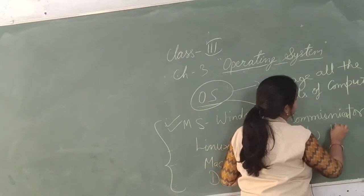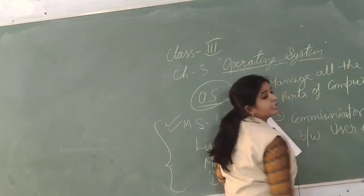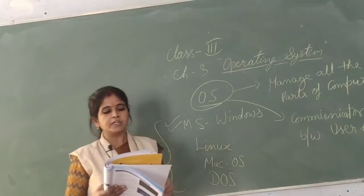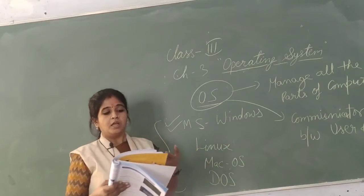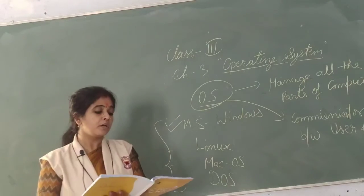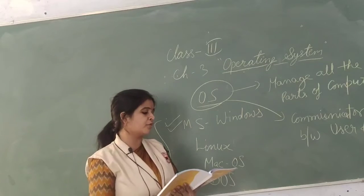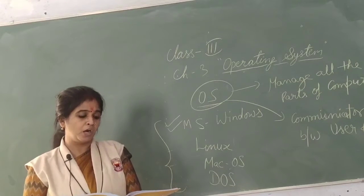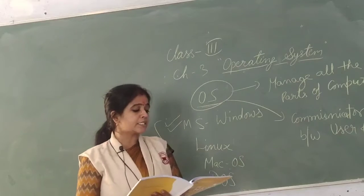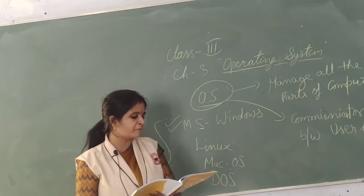Functions of the operating system: an operating system performs a lot of functions in a computer. It performs several functions ranging from taking input from input devices to sending output to output devices. You can say the functions of the operating system start from input and end at output.